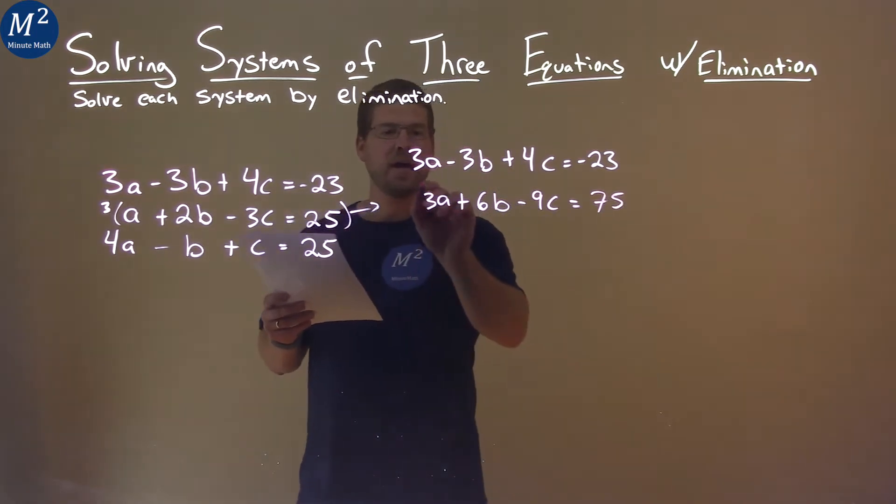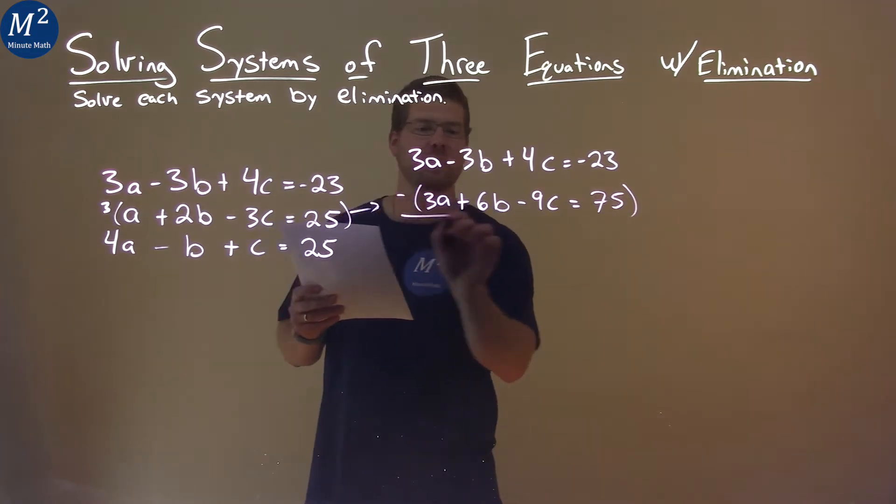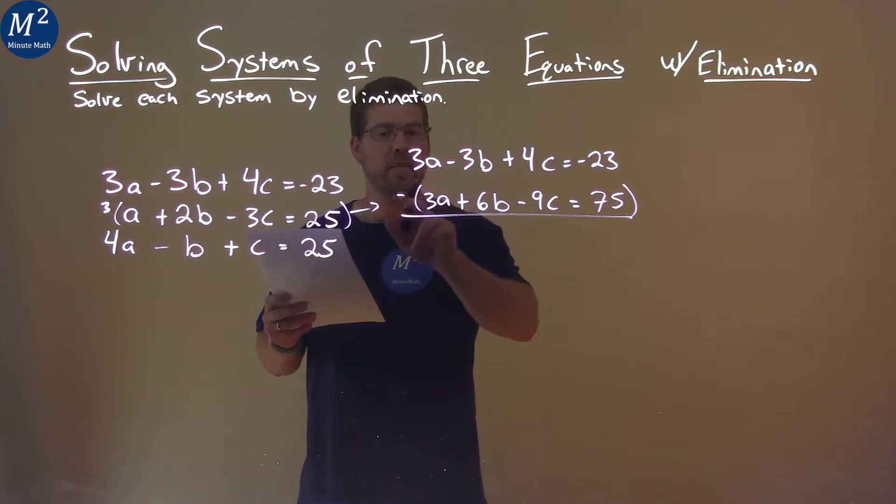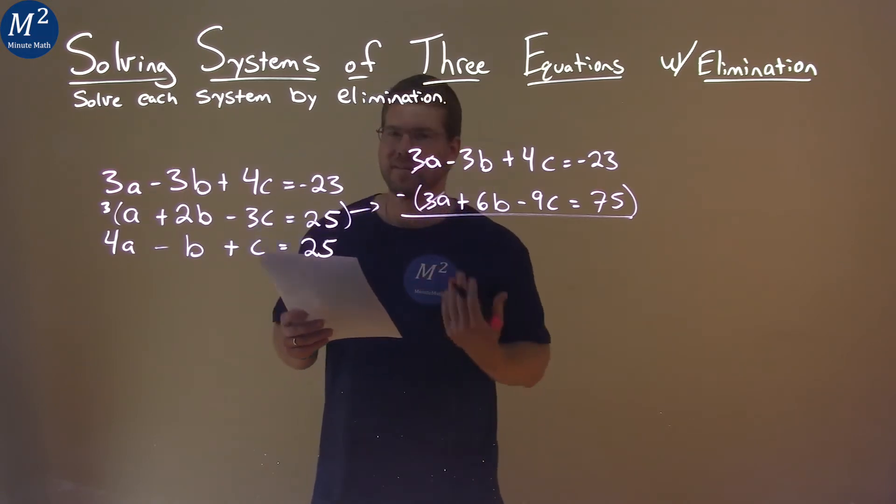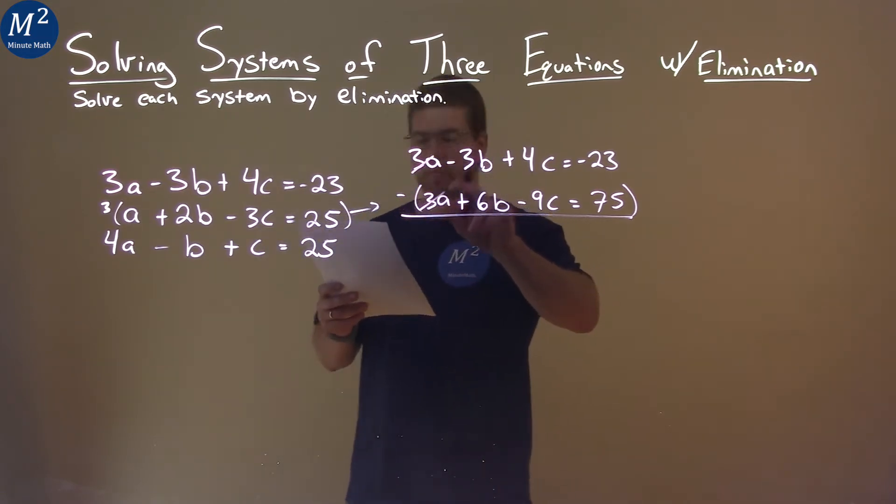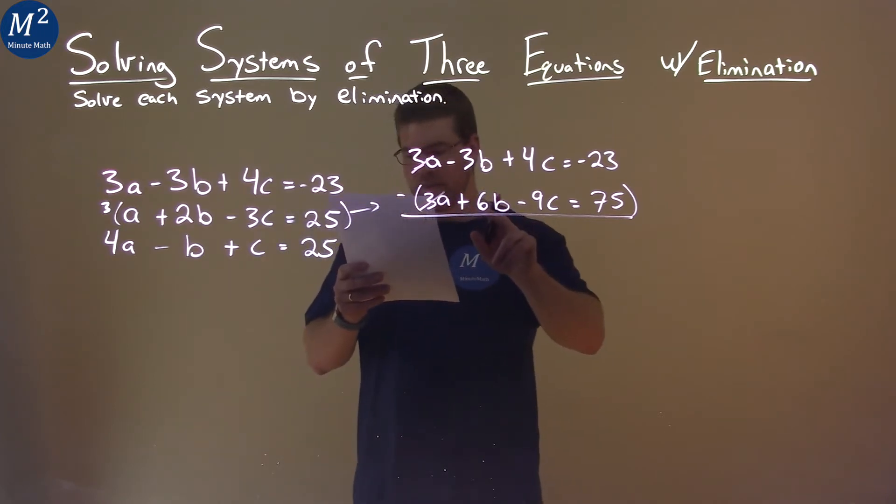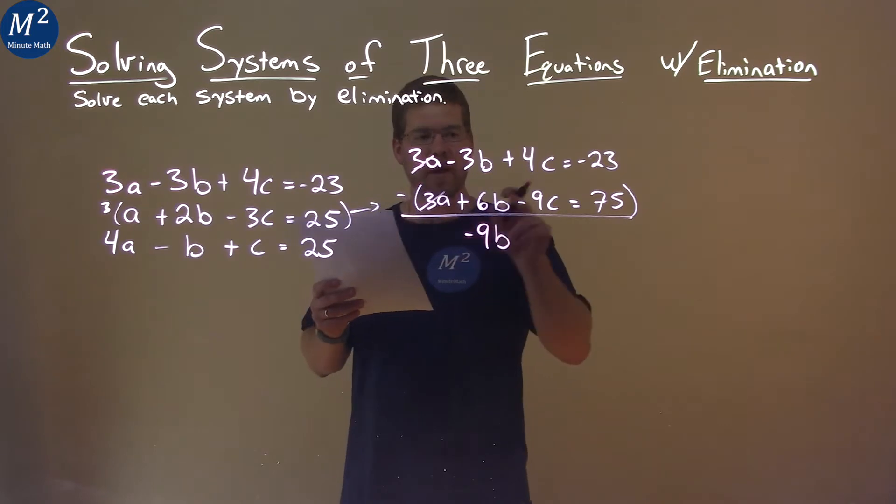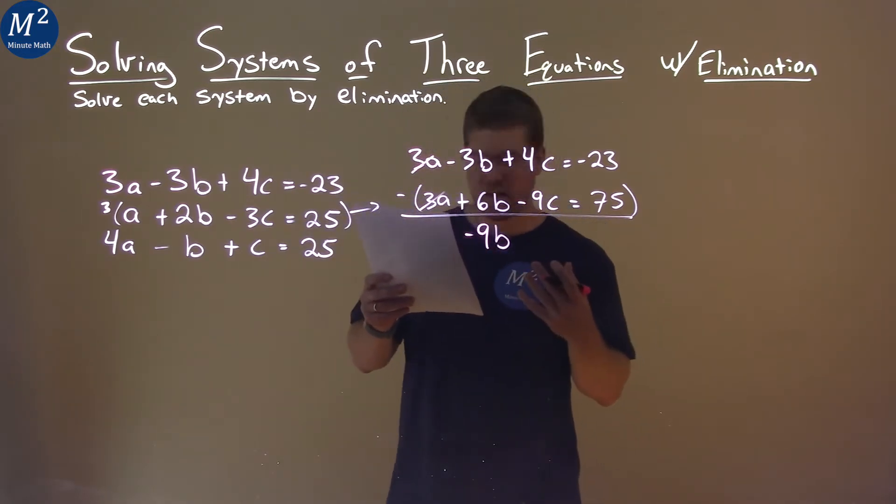I now can subtract these two equations. By doing so, I will eliminate the variable A. 3A minus 3A, zero, done. Negative 3B minus 6B is negative 9B. And 4C minus negative 9C is like adding 9C, and we have 13C here.